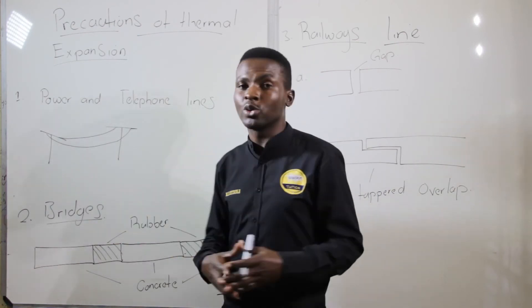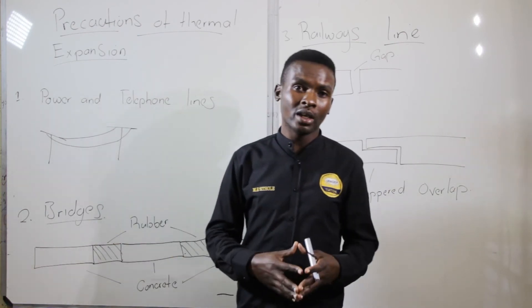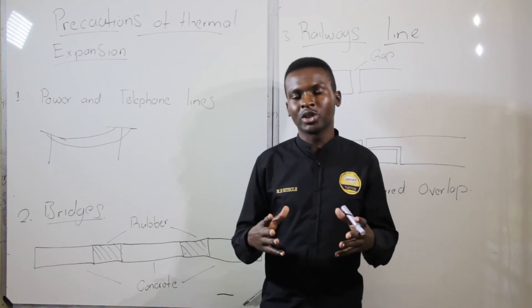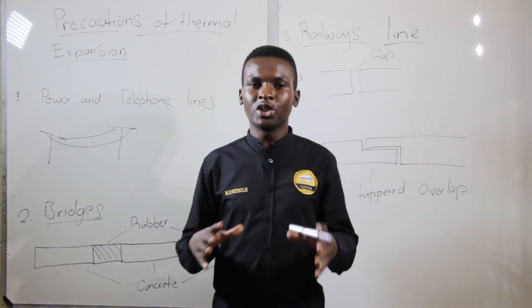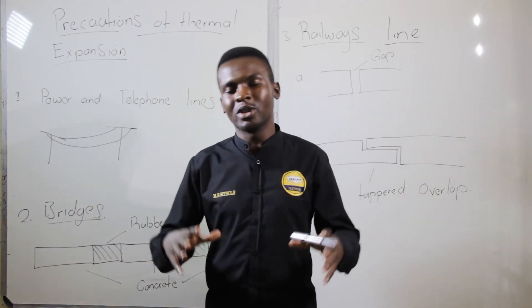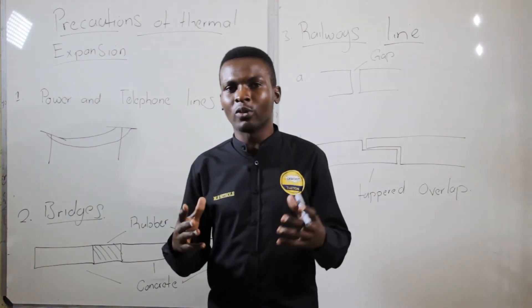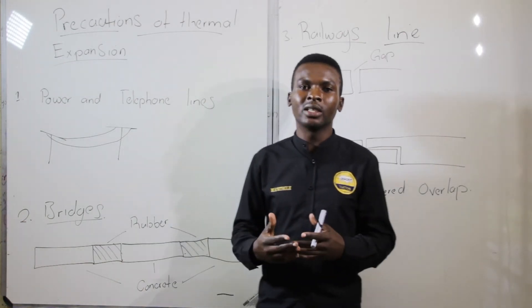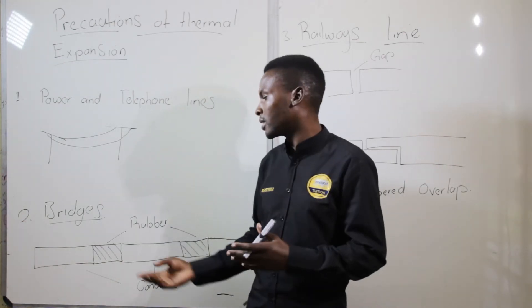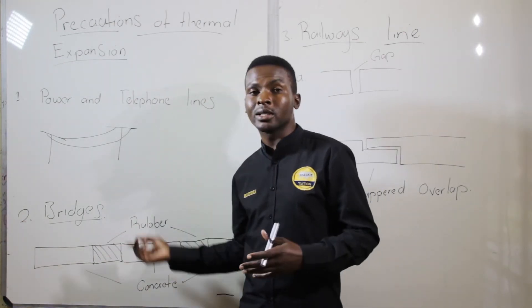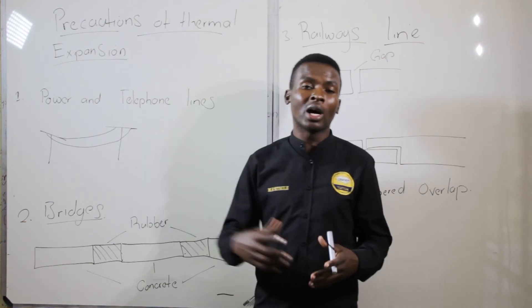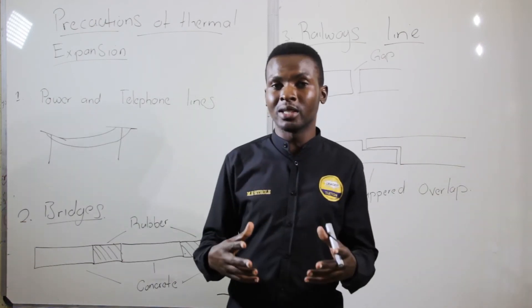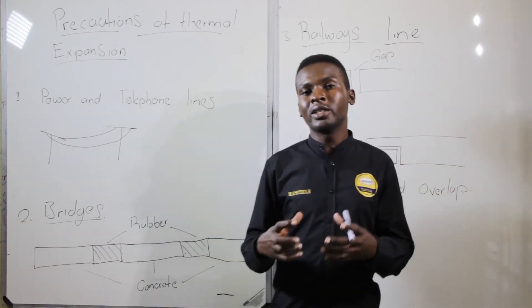The second example is going to be on bridges. When bridges are built, the foundation is not entirely made of concrete only — in between the concrete there is rubber that is placed there to allow contraction and expansion to take place.